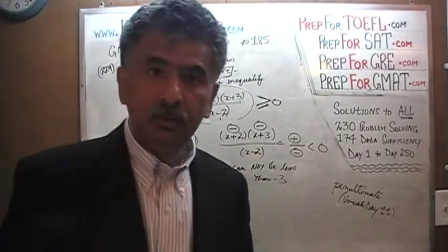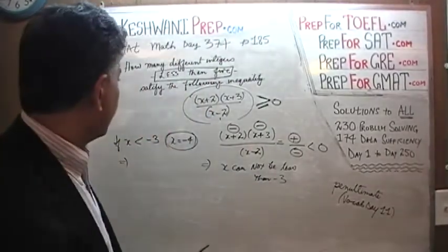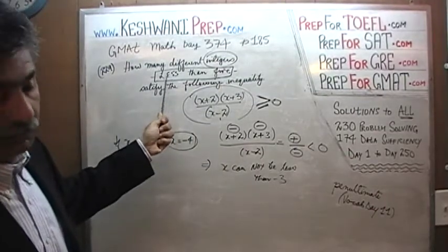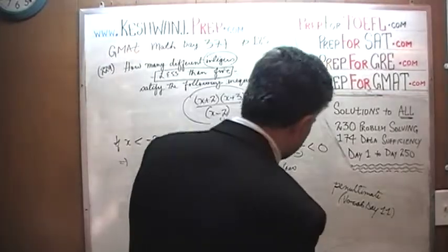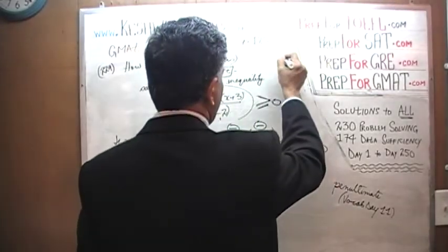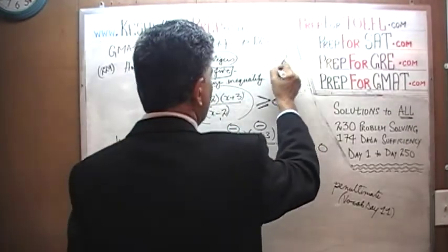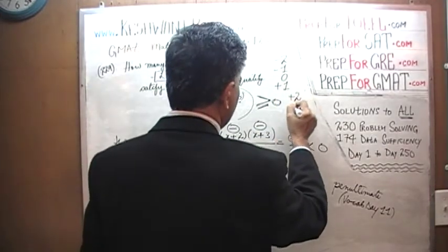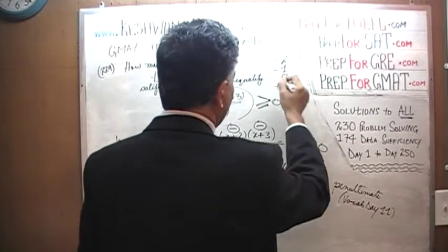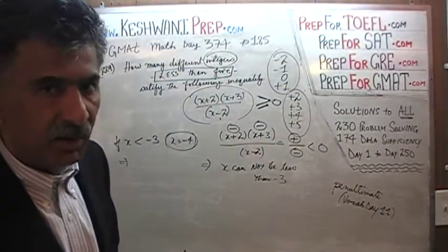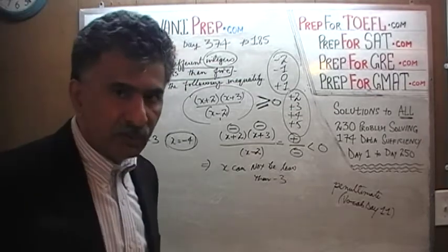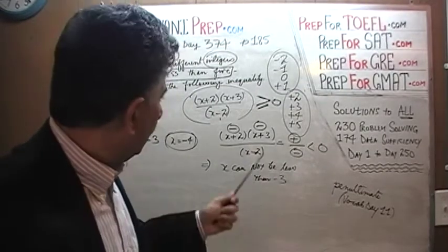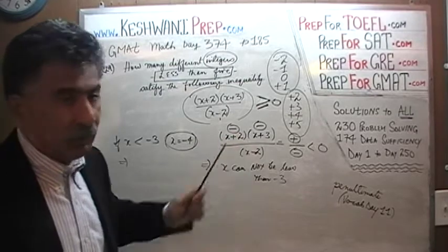That makes our life easier: x must be a whole number (an integer), it cannot be less than negative 3, and it cannot be more than 5. So the possibilities we have to contemplate are: negative 2, negative 1, 0, positive 1, positive 2, positive 3, positive 4, and positive 5. Those are 8 possibilities, and we must ask: for how many of them is the expression positive or equal to zero?